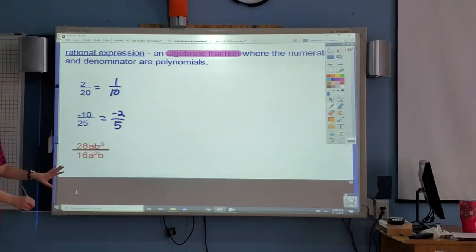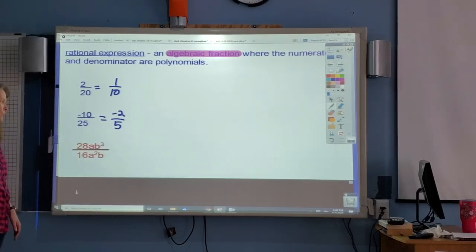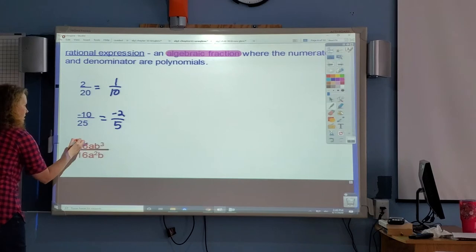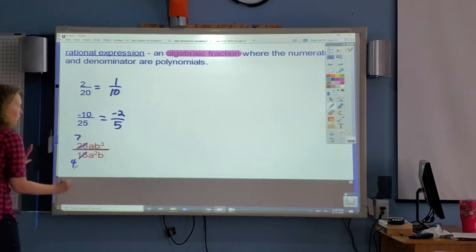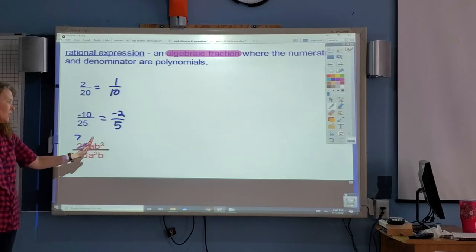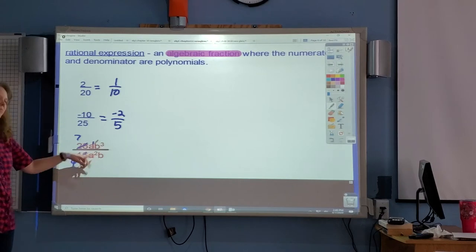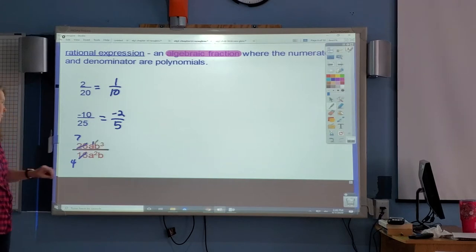So looking at this one, let me remind you, you look first at the numbers, 28 and 16. They both have in common a 4. So this would turn into 7, and this would turn into 4. They're actually finished. Now look at just the a's. This a is a to the first, and this is a to the second. If you remember what we do, they're being divided, so we subtract the exponents, but we write our answer where the biggest exponent was. So it'll be down here, the a to the first.